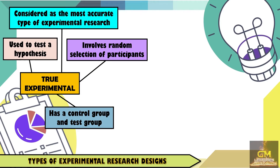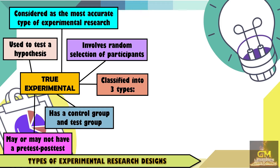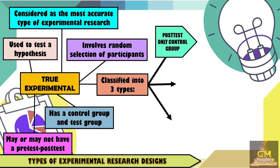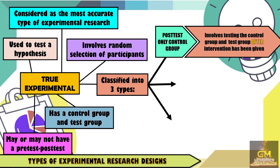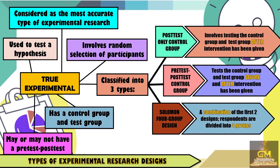The true experimental research design involves random selection of participants as well as having a control group and a test group. It is also worth noting that the true experimental research may or may not have a pre-test or post-test. With regard to types, it can be classified into three types: the post-test only control group, which involves testing the control group and test group after the intervention has been given; the pre-test post-test control group, wherein it tests the control group and test group before and after the intervention; and the Solomon four-group design, which is a combination of the first two designs, wherein the respondents are divided into four groups.